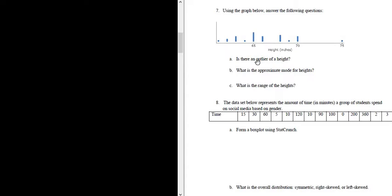OK, part A: is there an outlier of a height? An outlier is a number that is far away from all of the other numbers. In this case, yes, 75 is pretty far from the rest of the numbers, so it's considered an outlier. The answer to part A would be yes, and it is 75.